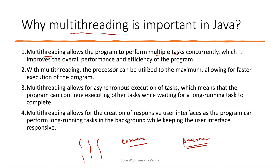That is why we use threads — we assign additional tasks to a thread: go in the background and get the data while the main thread continues its work. This improves the overall performance and efficiency of the program. Second is processor utilization. To utilize a fast processor to the maximum, you need to make use of threads. There is something called context switching, which we will discuss later, and because of that your processor becomes very efficient.